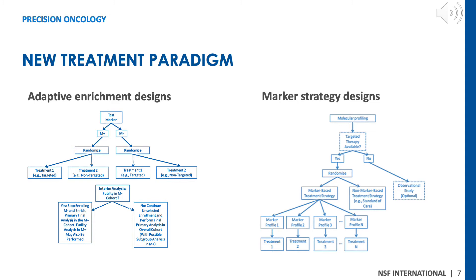Under the adaptive enrichment design, an unselected patient population is randomized to experimental or control treatment, and an interim analysis is planned. At the time of interim analysis, if the experimental treatment effect reaches a futility threshold in the marker-negative group, enrollment of marker-negative patients is terminated and the remaining sample size is reallocated to marker-positive patients.